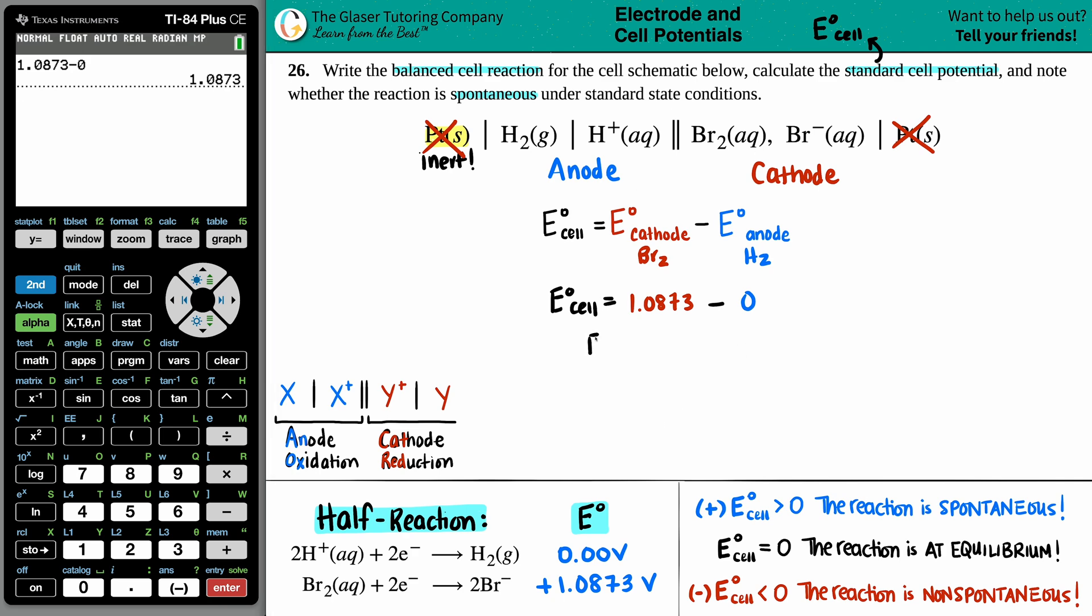So E-cell equals... It's getting late, guys. It's getting late on my end. It's 2:27 AM. But we keep going for the channel, for you guys. So anyway, this is the same number, 1.0813 V, and that is the standard cell potential.